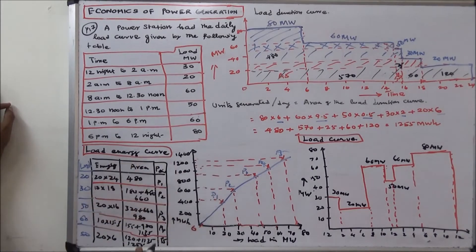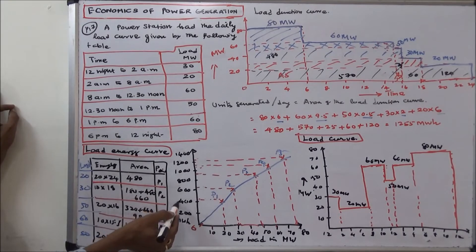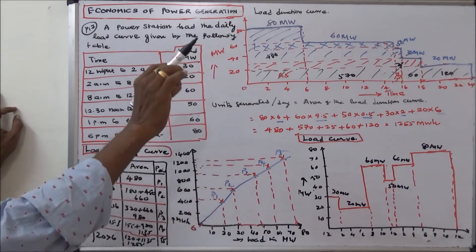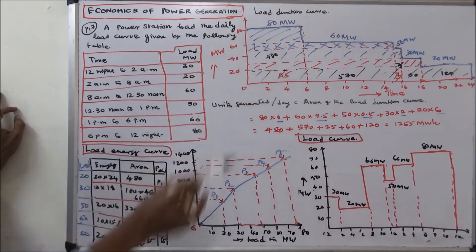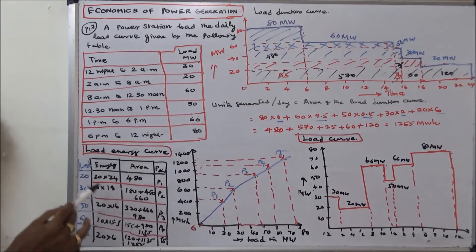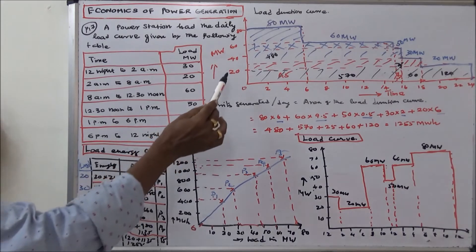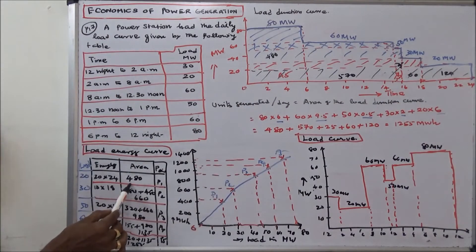Next we draw the load energy curve. X-axis is load in megawatts, Y-axis is energy in megawatt hours. From the load duration curve, we calculate five areas: A1, A2, A3, A4, A5. At load 20 MW: energy = 20×24 = 480 MWh — this is point P1. For area A2: 10×18 = 180; 180 + 480 = 660 — this is point P2 at 30 MW.